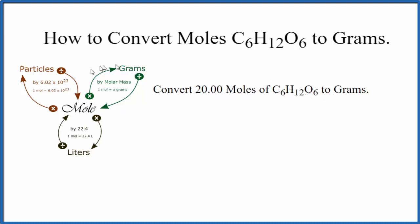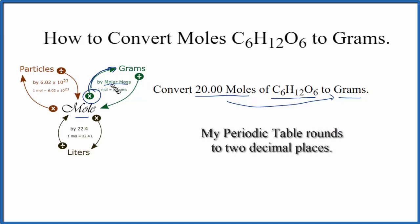We'll use this mole map here to guide our work. We can see we have 20 moles of this C6H12O6 and we want grams. So we're going from moles to grams. If we're going from moles to grams, we're going to multiply by the molar mass.